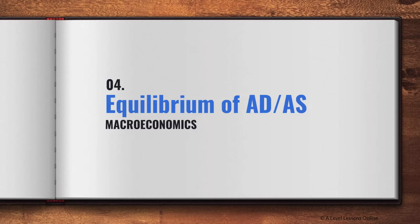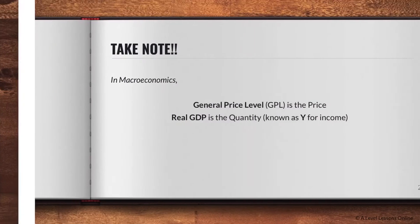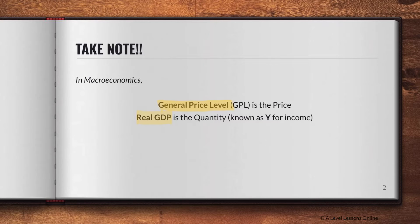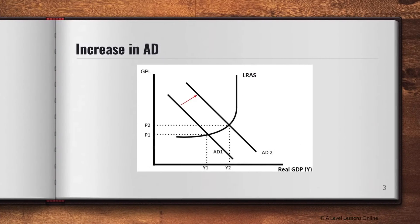I've already gone through everything you need to know regarding demand and supply — how to find the equilibrium price and quantity — so this is no different. In macroeconomics, you're looking at the entire economy, not just one firm or industry. You're looking at the general price level (GPL), which is like the price in micro, and real GDP, which is the quantity — otherwise known as Y for national income. GPL is your y-axis and real GDP is your x-axis.